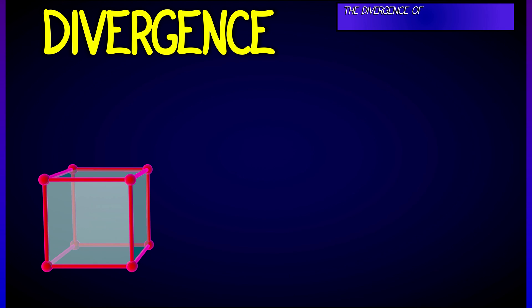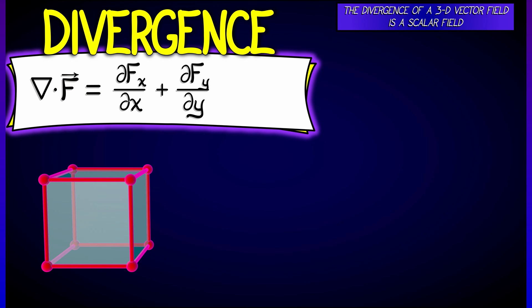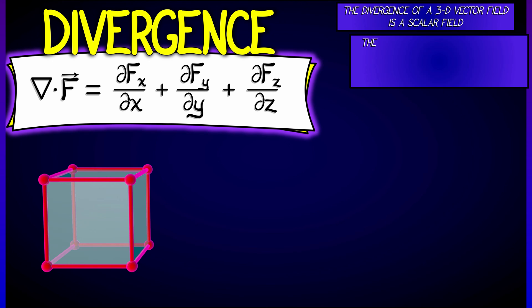Let's say that we have a vector field f in 3D. Then the divergence of f is a scalar field given by the partial of the x component fx with respect to x, plus the partial of fy with respect to y, plus the partial of fz with respect to z.